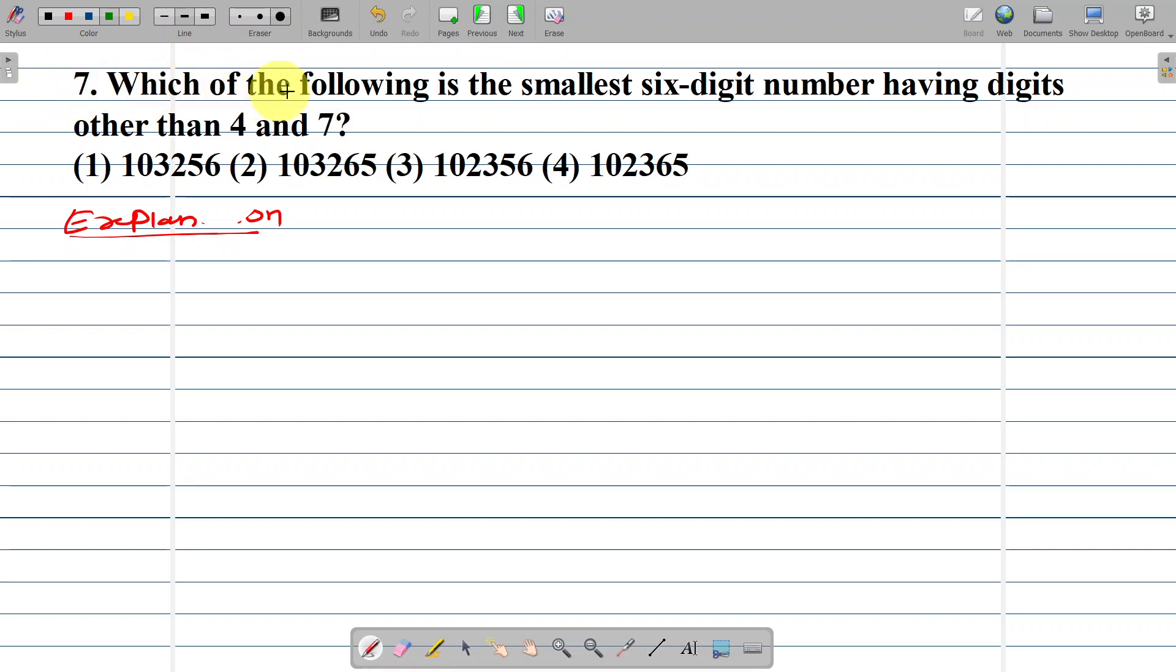Example number 7. Which of the following is the smallest 6-digit number having digits other than 4 and 7? Option 1: 103256. Option 2: 103265. Option 3: 102356. Option 4: 102365.